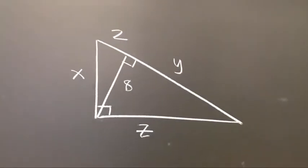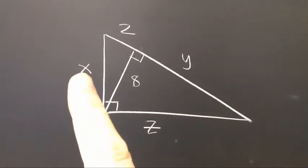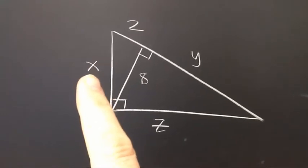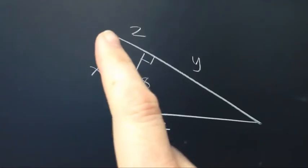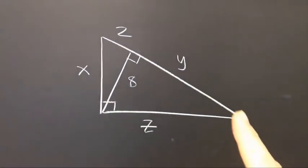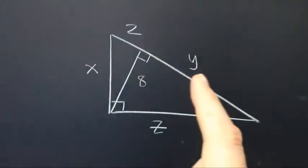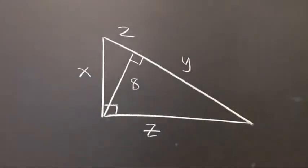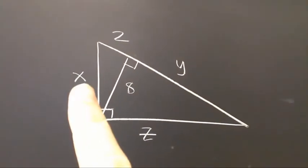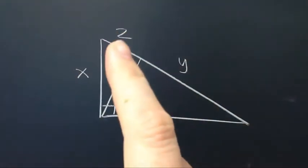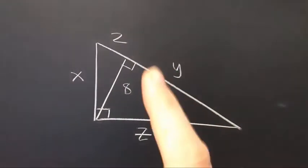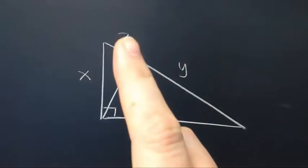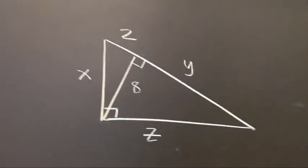Now the way that this works for the legs, x is the geometric mean of 2 and the entire hypotenuse, 2 plus y. So let me say that again. X is the geometric mean of 2 and 2 plus y. Well I know that y is 32, so 2 plus 32 is 34.